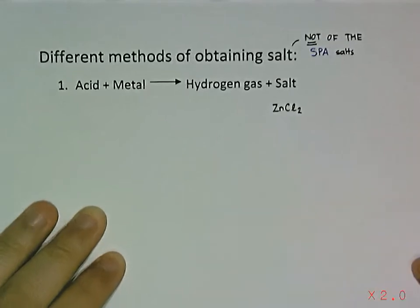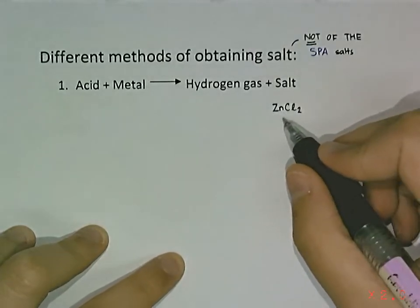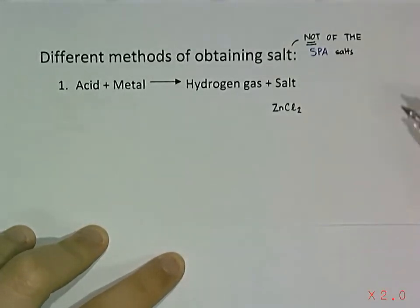Today, let's look at one of the methods to obtain zinc chloride. We are going to use this method called acid react with metal to get hydrogen gas and the salt.